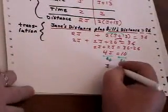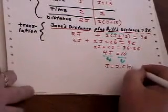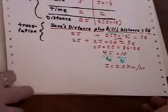Okay. So J is 2.5. And since it's a rate, it'll be kilometers per hour, since we're dealing in hours here.